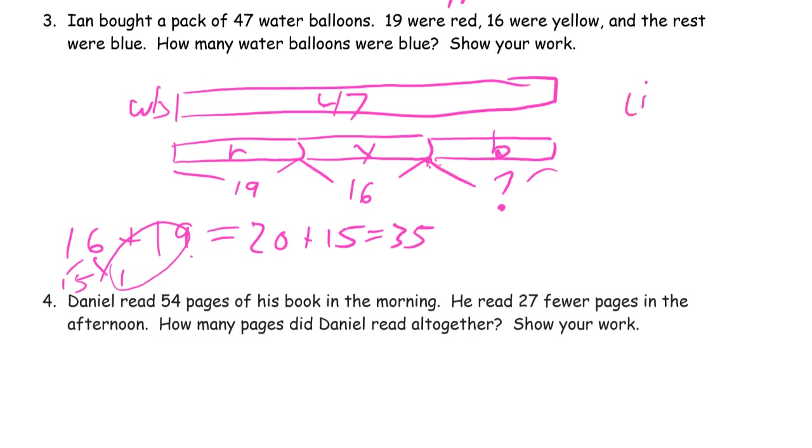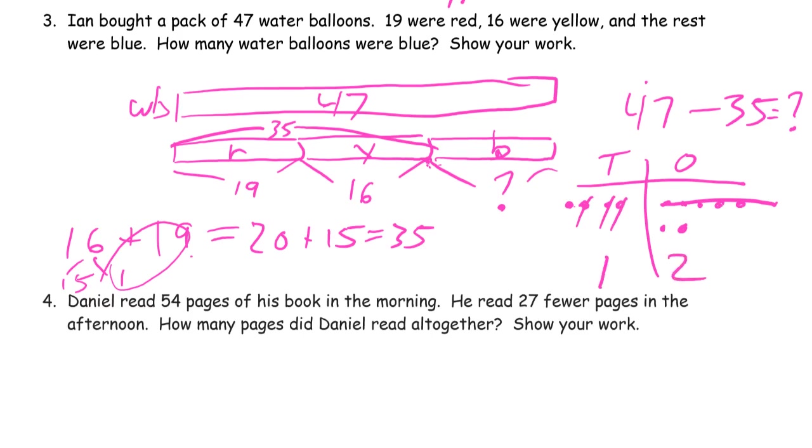Now we have to subtract 47 minus this is 35. We can use tens and ones. 47 is our minuend. 1, 10, 20, 30, 40, 41, 42, 43, 44, 45, 46, 47. Can I cross out 5 ones? I sure can. Can I cross out 3 tens? 1, 2, 3. That's what I have left here. I have 1 ten and 2 ones. 12. 12 water balloons are blue.